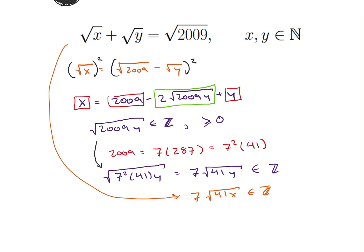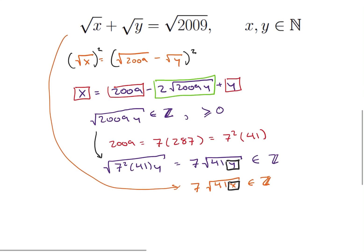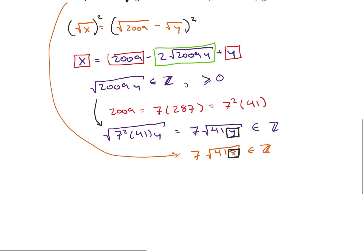So we're kind of working toward our solution here. So now how is this helpful? What does this really do for us? Well, what this tells us is that y and x must both be perfect squares times 41.